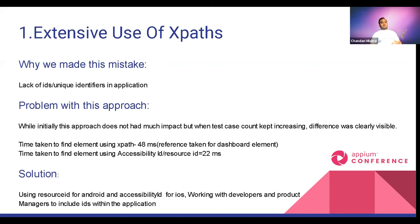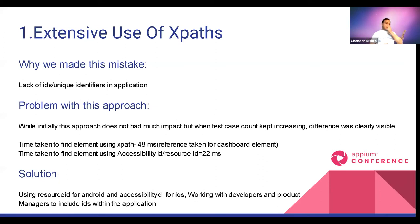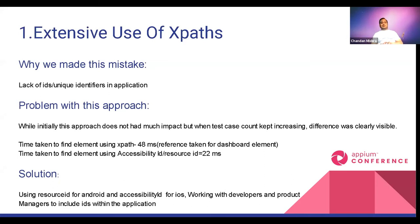It was fine until we had 50 to 100 cases, but slowly we saw execution taking a lot of time, especially for iOS. Android was still fine, but for iOS the difference is huge when comparing accessibility ID to XPath. For a normal dashboard element, XPath was taking 48 milliseconds while accessibility ID took only around 20 to 26 milliseconds — roughly a 2x difference.